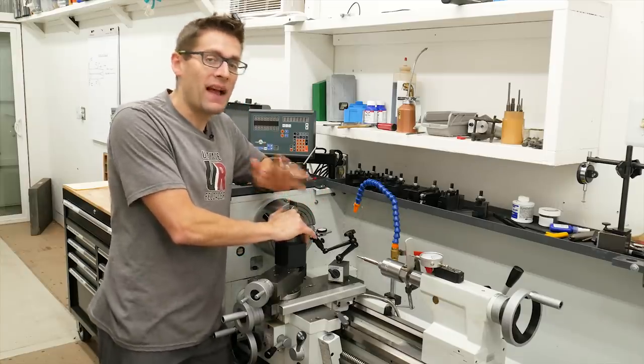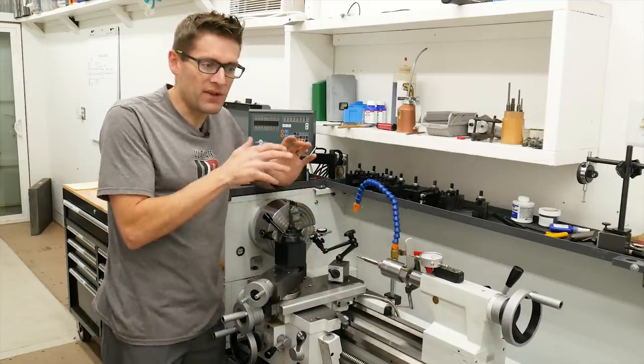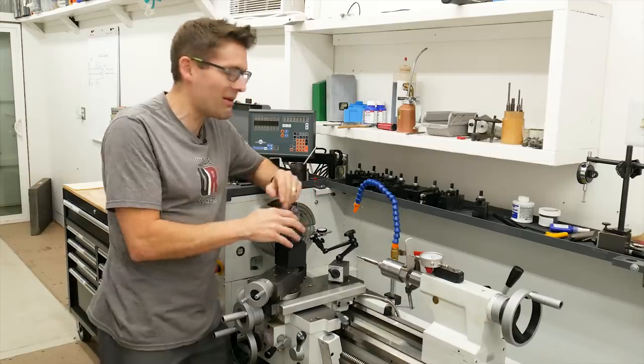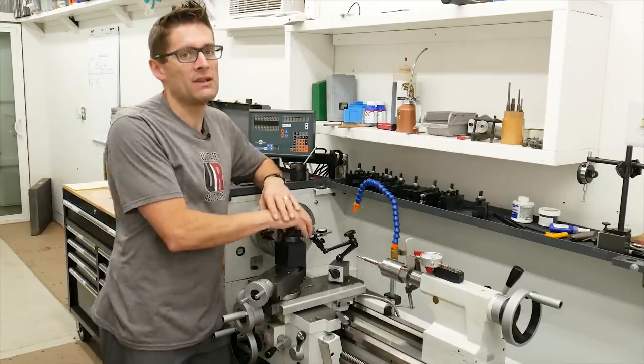And like I said, in the last video where we ended up was we got the barrel blank installed in the lathe, we got it aligned, got everything clamped down, just the right chuck jaw pressure, double checked our alignment, and that means we're ready to start machining.